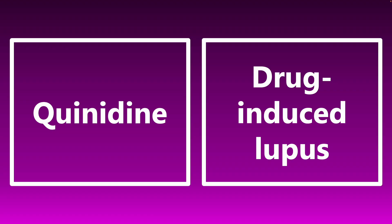Quinidine — this is another obscure medication, but it has a high-yield association: drug-induced lupus. Quinidine is an antiarrhythmic drug that can be used to treat atrial fibrillation or atrial flutter, though not very commonly used anymore. Lower yield for its primary use, but high yield for its association with drug-induced lupus.